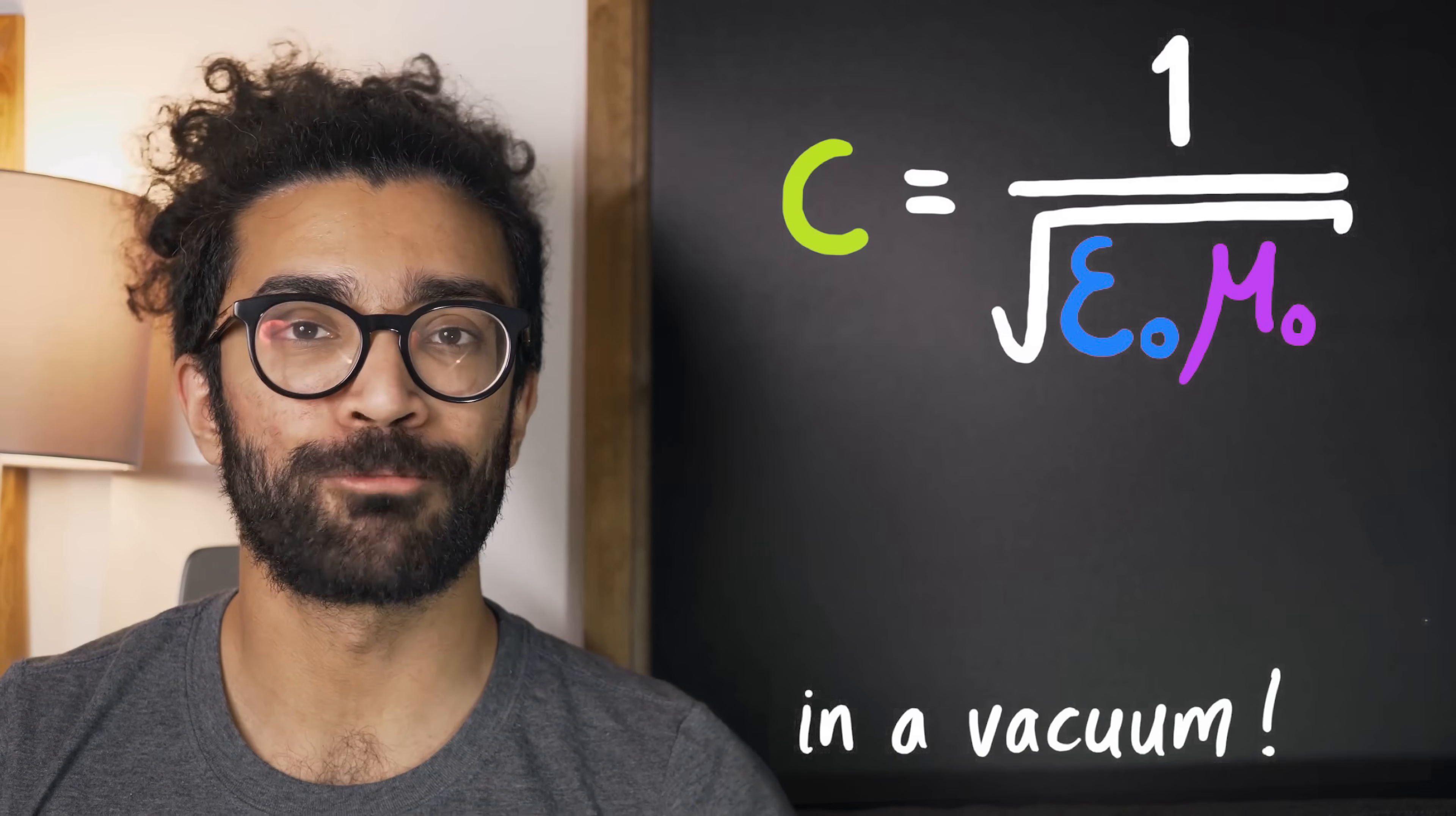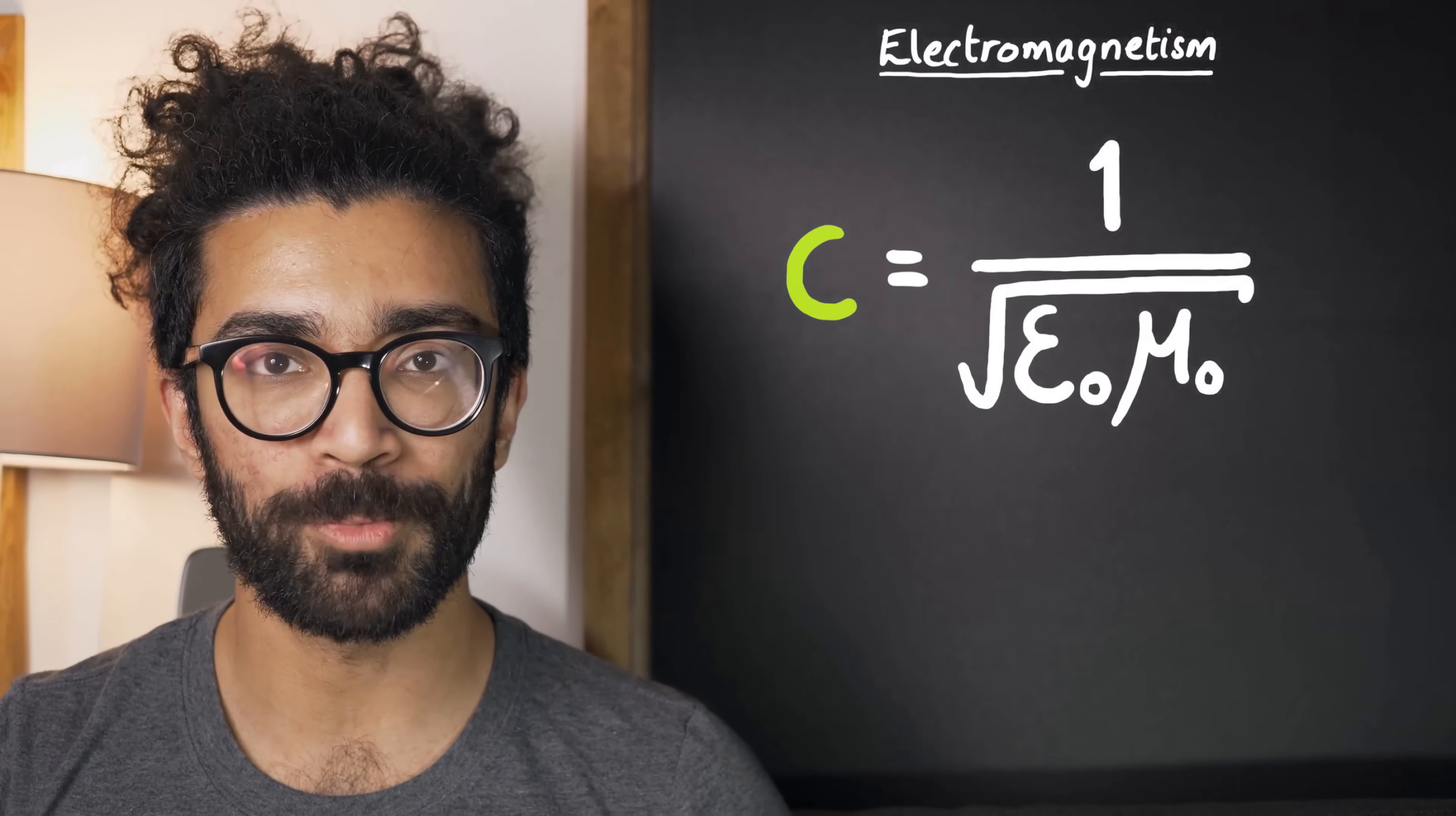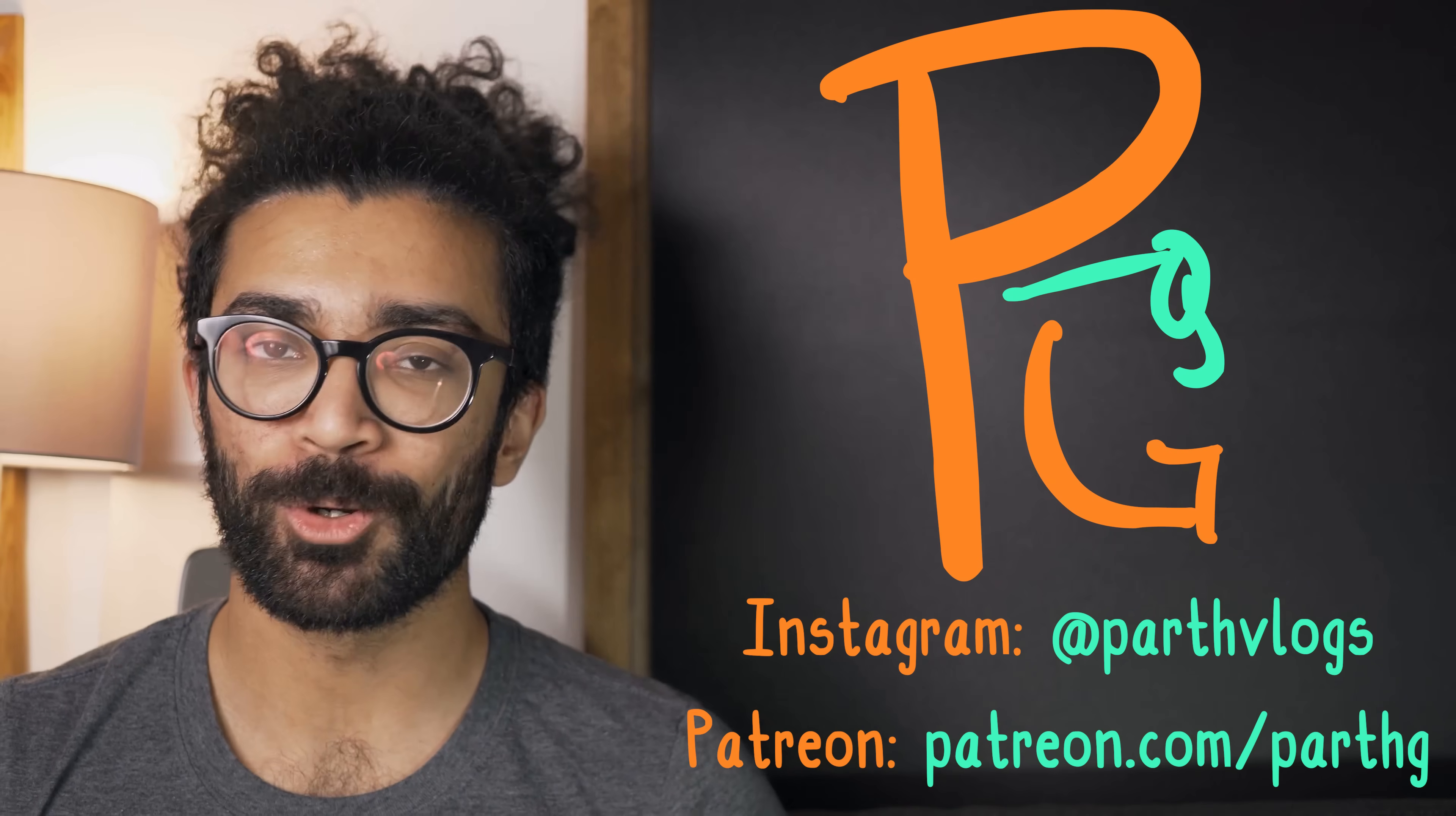Unless, of course, we want to do some really high precision calculations. But so what we're seeing here is that the theory of electromagnetism predicted that the speed of light was a constant related to the properties of empty space. It had nothing to do with who was measuring it or how fast they were traveling.